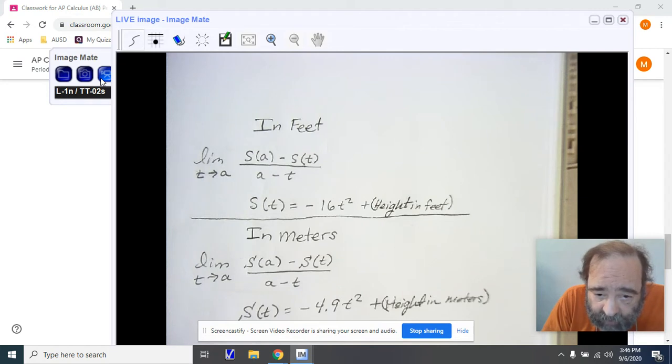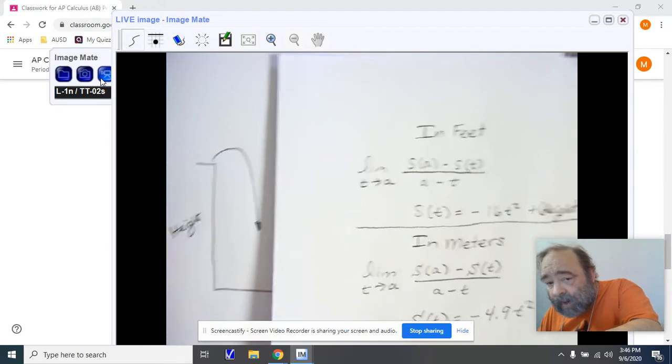Now, the formula, the equation that we're working with is s(t) equals negative 16t squared plus the height in feet. That's going to be referring to the height of this object.